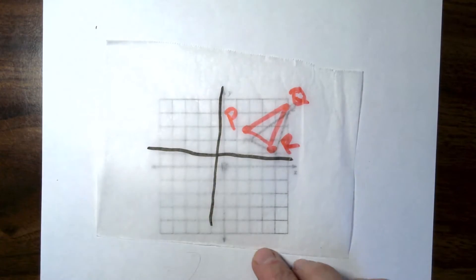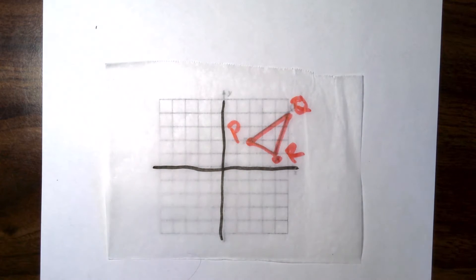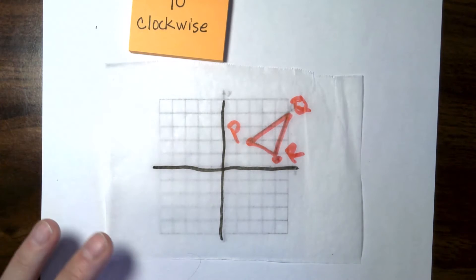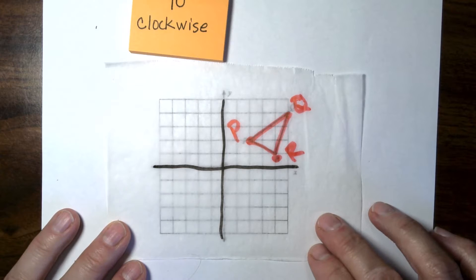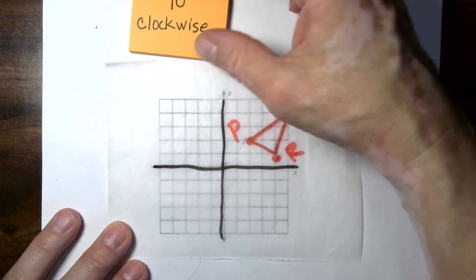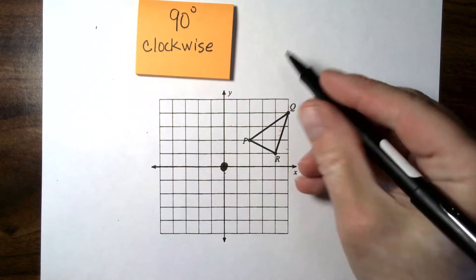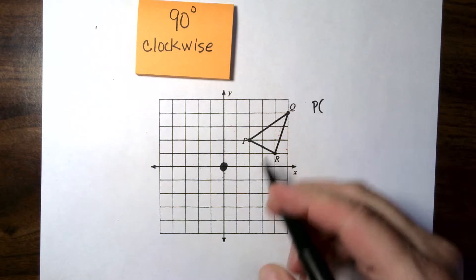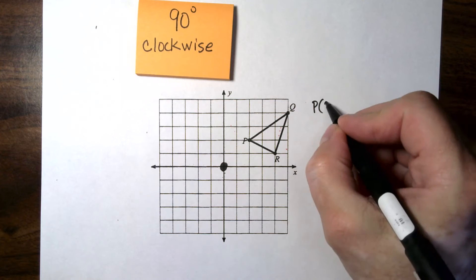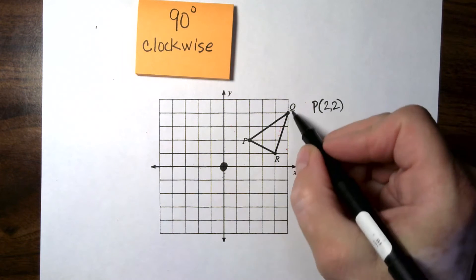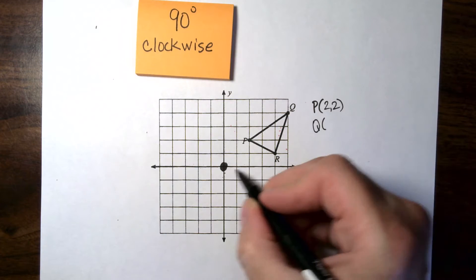All right, moving that off. Let's do the first problem that you may see. You may be asked to rotate this triangle 90 degrees clockwise and then give the new points. Let's start by writing down the old points. So P is (2, 2).